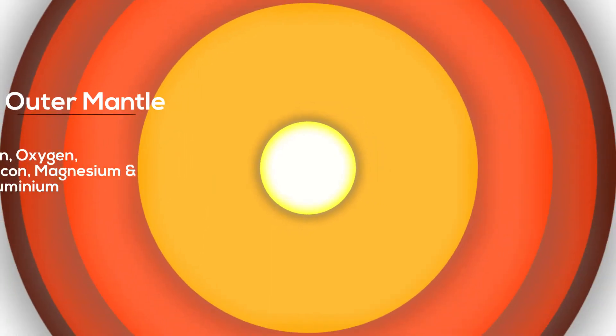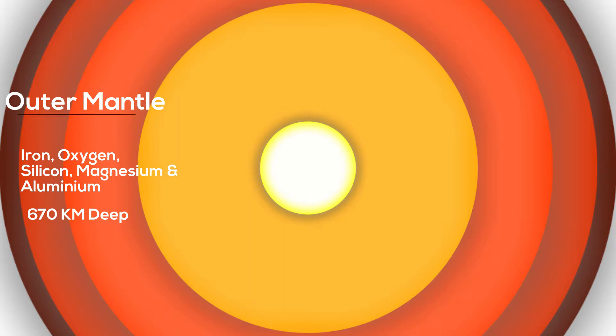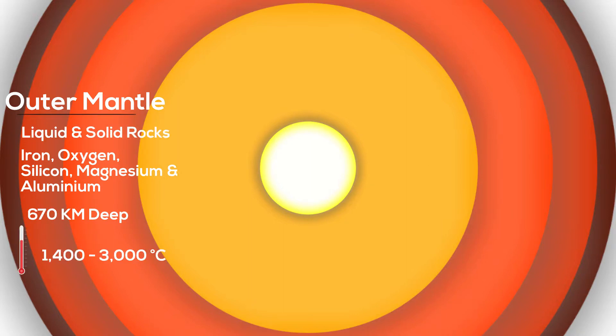The outer mantle has the same material as the inner mantle, but it's 670 kilometers deep and a mix of liquid and solid rocks. The temperature of this layer is 1,400 to 3,000 degrees Celsius.